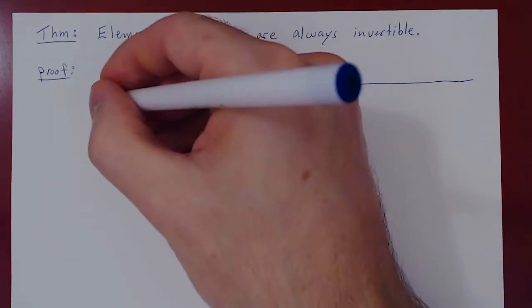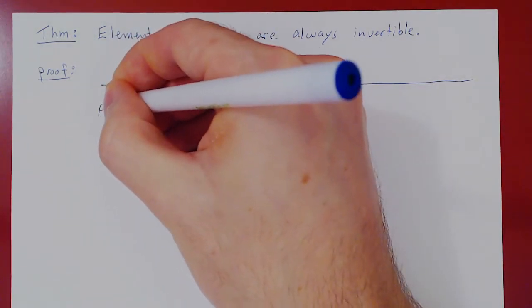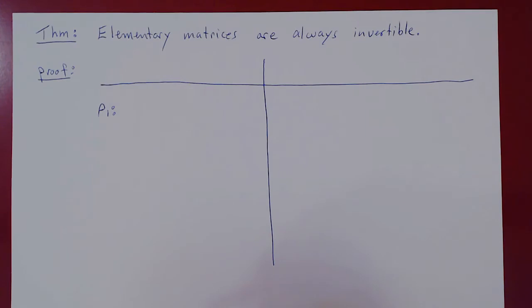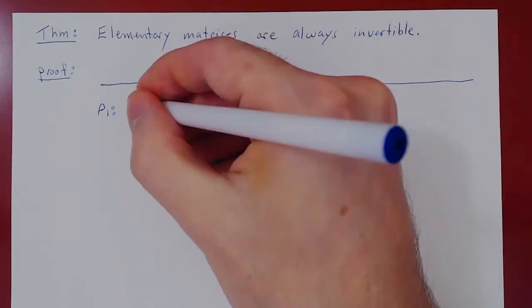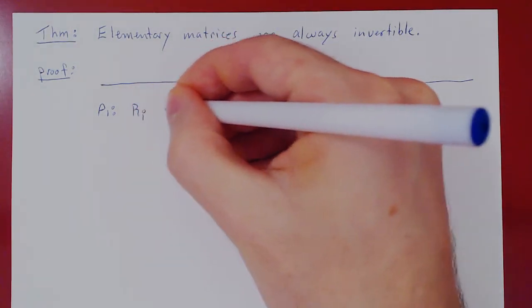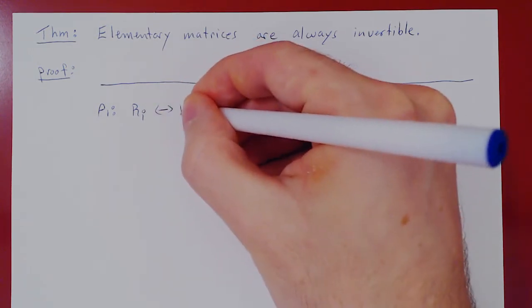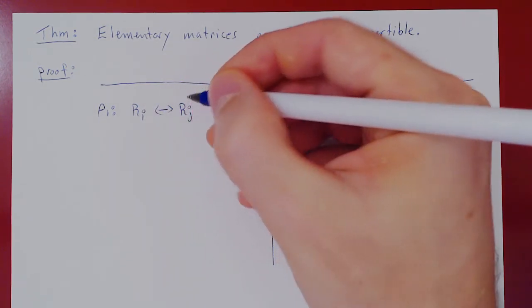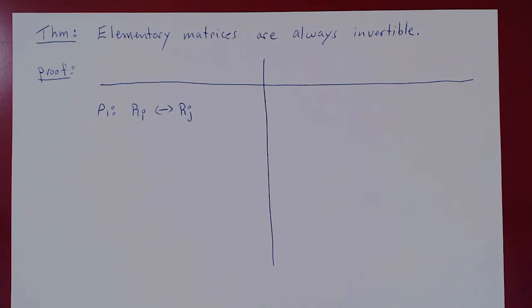Let's look at the first type of row operation. The simplest type is the swapping of two rows. Suppose we swap the i-th row of a matrix with the j-th row of a matrix. Now think of this: how would you invert this?